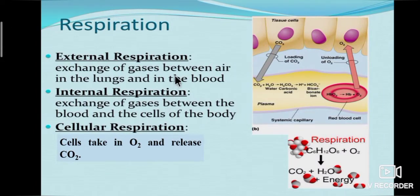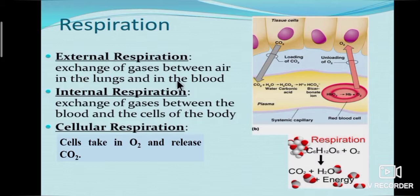Exchange of gases by the respiratory system involves three processes: external respiration — exchange of gases between air in the lungs and the blood; internal respiration — exchange of gases between the blood and cells of the body; and cellular respiration — cells take in oxygen and release carbon dioxide.